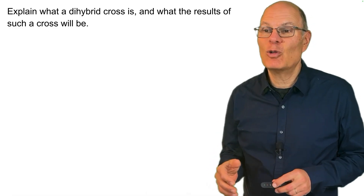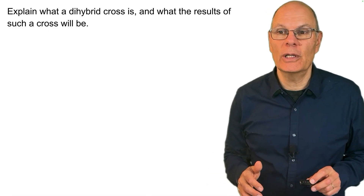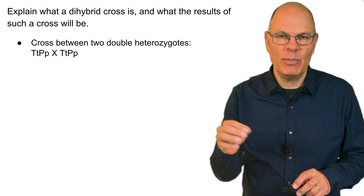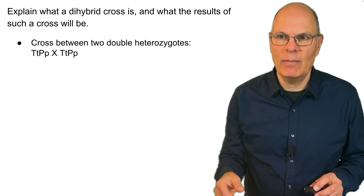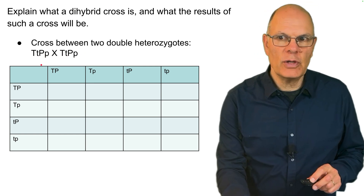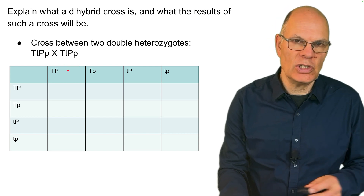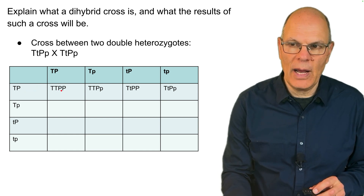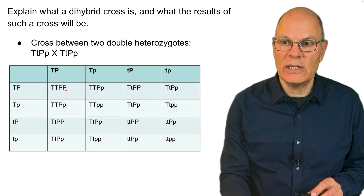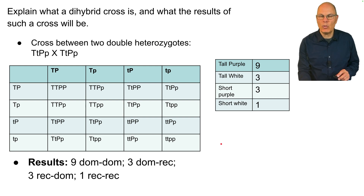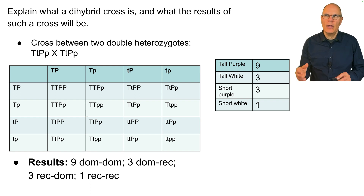A dihybrid cross is a cross between two double heterozygotes. We're crossing big T, little t, big P, little p with the same. You use the FOIL algorithm to determine the gametes, then bring the alleles down and over to combine them across all 16 squares of the dihybrid Punnett square. What you wind up with is a nine to three to three to one ratio in the offspring — that is worth memorizing.